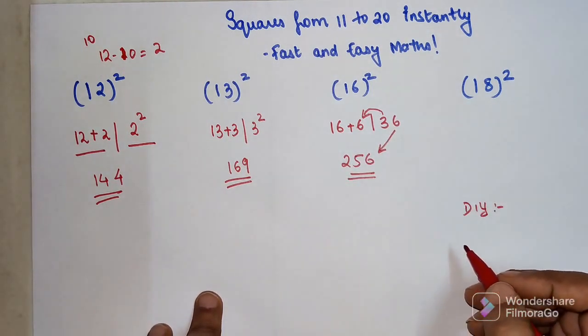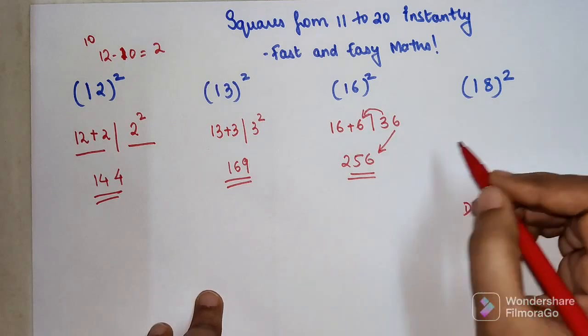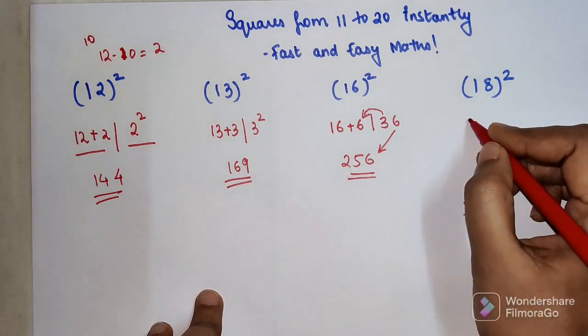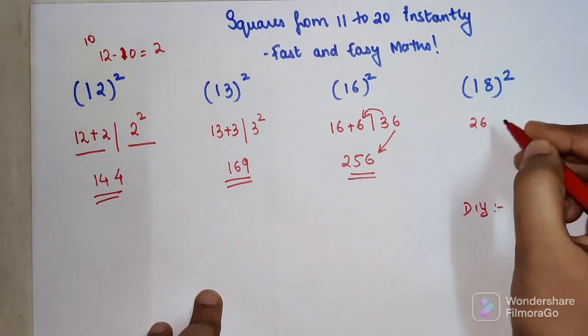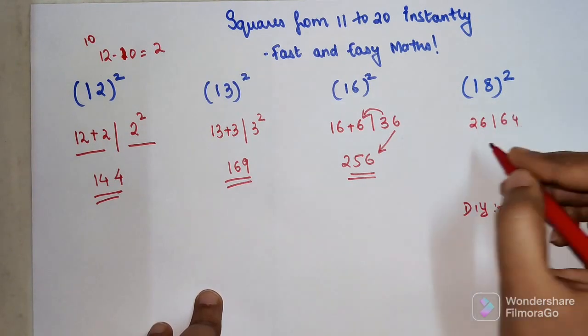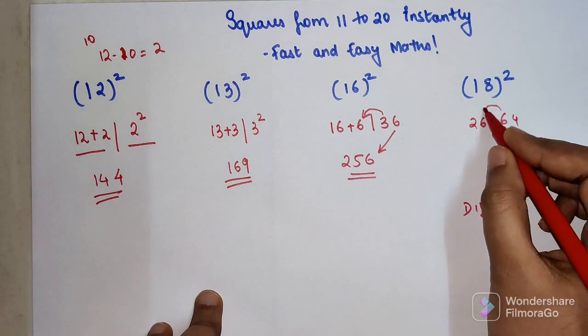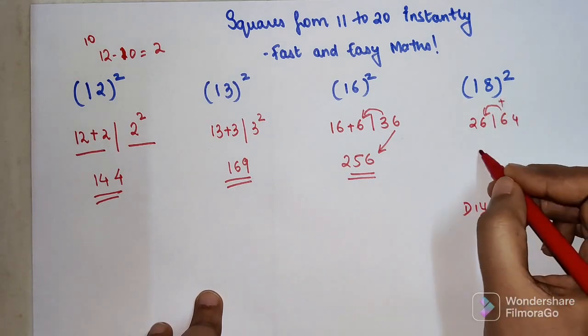So now this one is 18. We're going to do this orally. 18 plus 8 is going to get you 26, and 8 squared is 64. So your final answer will be 26 plus 6 which is going to be 32, and the final last digit is 4.